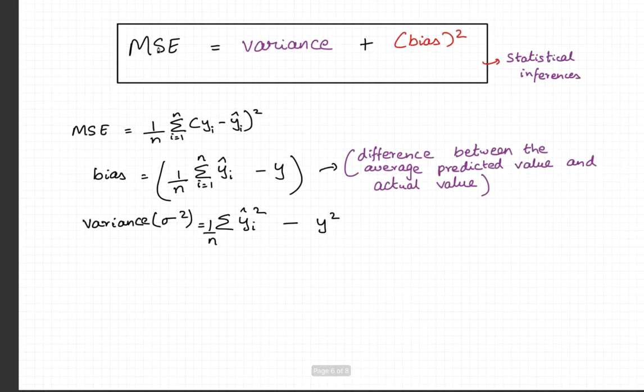Mean square error is also nothing but the variance and the square of bias. This particular representation you can find commonly in statistical inferences. The mean square error is nothing but average of the sum of the errors. Bias is nothing but the difference between the average predicted value and the actual value. Variance can also be expressed in this particular form. So when you do the math, it all adds up to mean square error being the sum of variance and the square of bias.